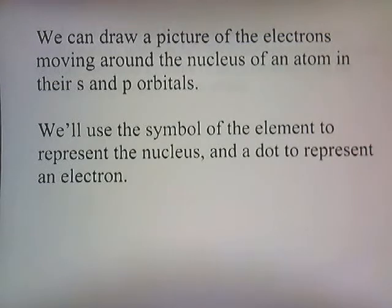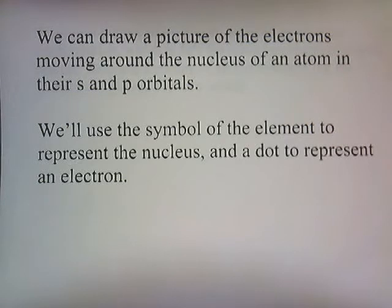We can draw a picture of the electrons moving around the nucleus of an atom in their S and P orbitals. We'll use the symbol of an element to represent the nucleus, and a dot to represent an electron.